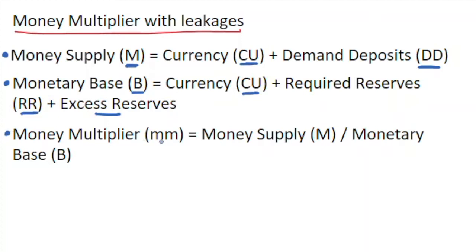Finally, the money multiplier (MM) is worked out as follows: MM equals the money supply divided by the monetary base, both of which we've defined above.